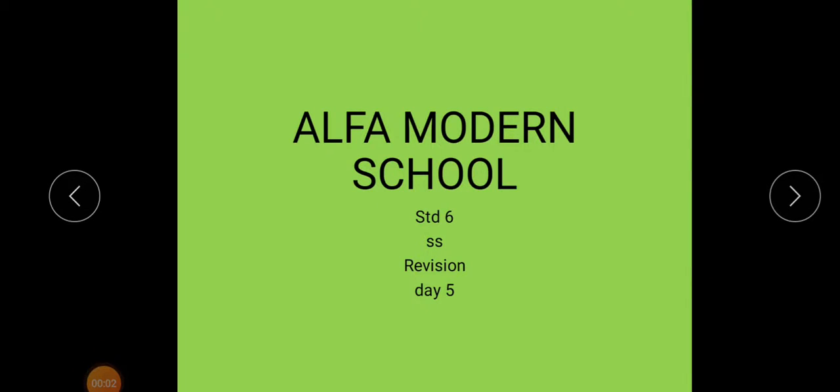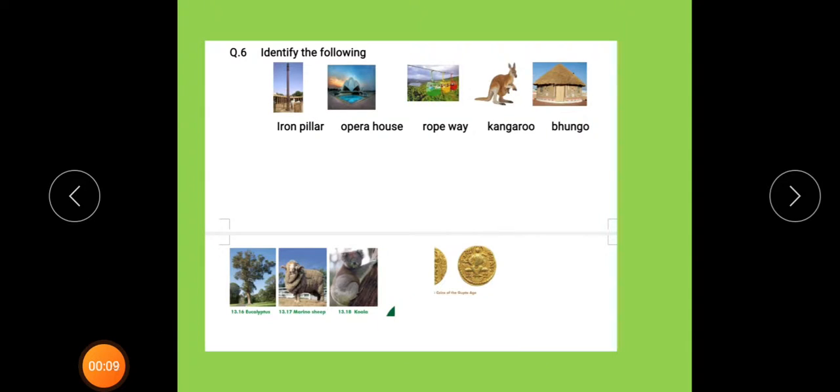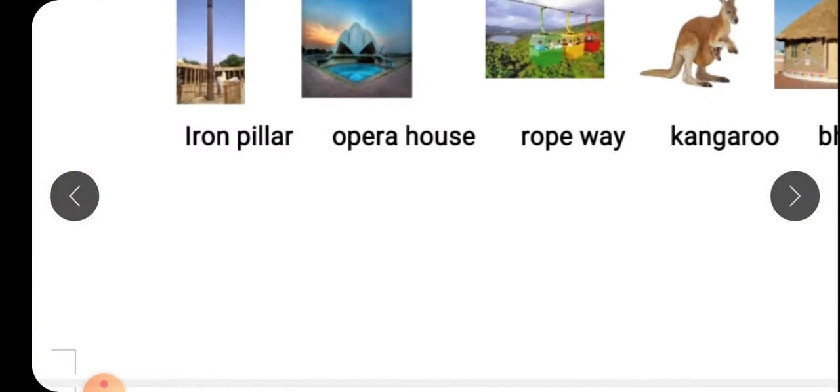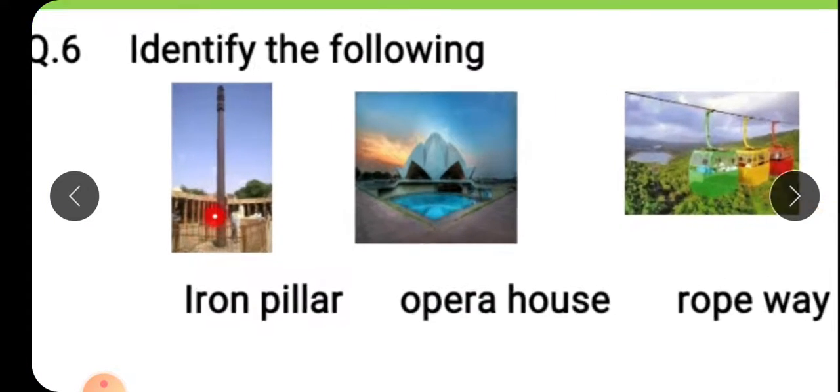Standard 6 Assess Revision Day 5. Question number 6, identify the following. In this question you are going to get the pictures and you have to write the answers given below the picture. For example, can you see the first picture children? These pictures you will get in your textbook.